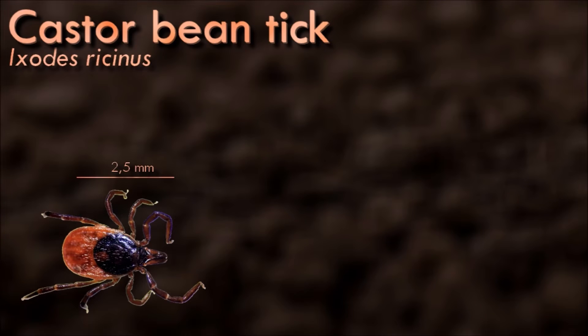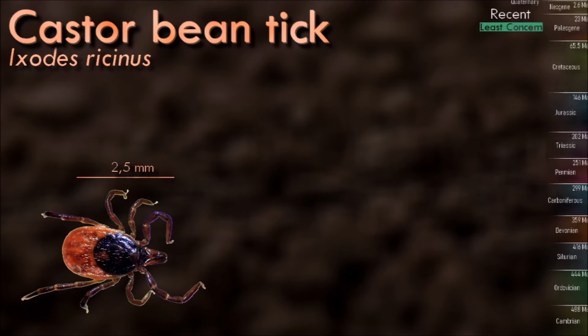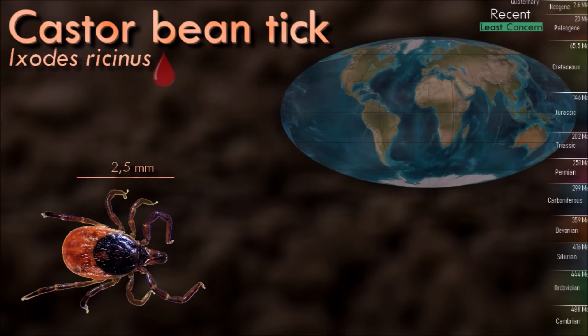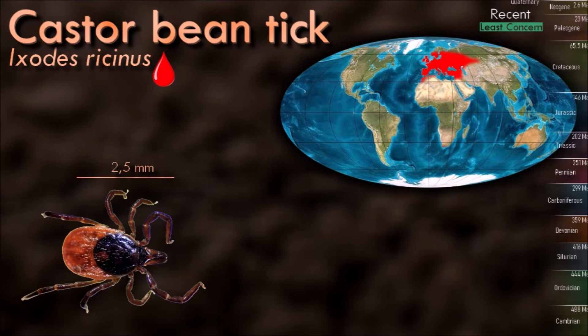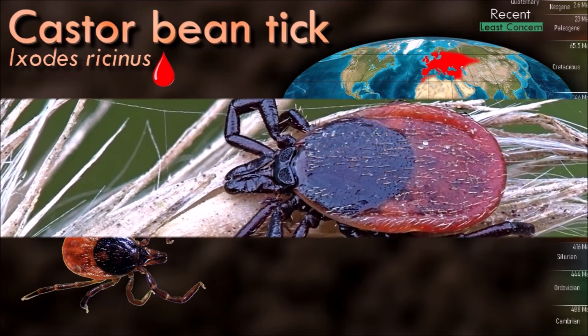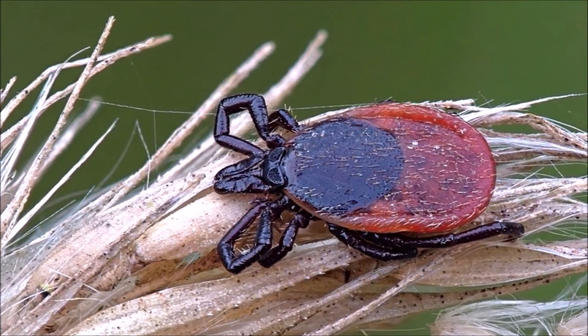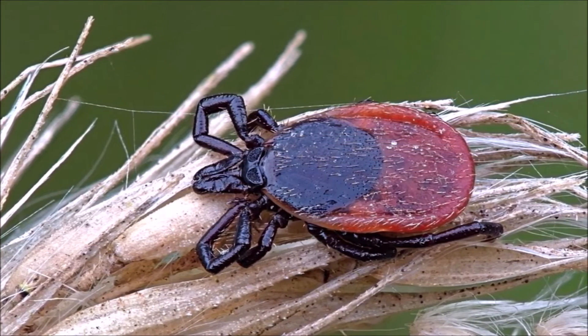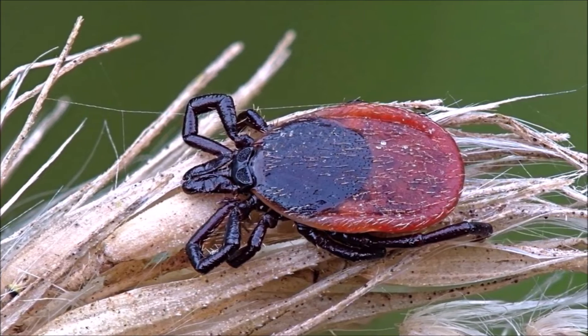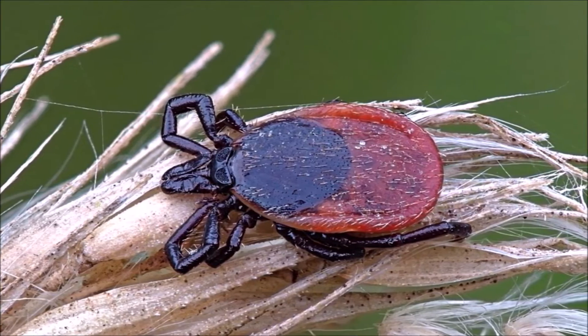The castor bean tick has a three-host life cycle, which usually takes two to three years to complete, although it can take from one to six years in extreme cases. Adults feed on large mammals such as cattle, dogs, deer, humans, and horses for 6–13 days before dropping off. An engorged female lays several thousand eggs and subsequently dies.